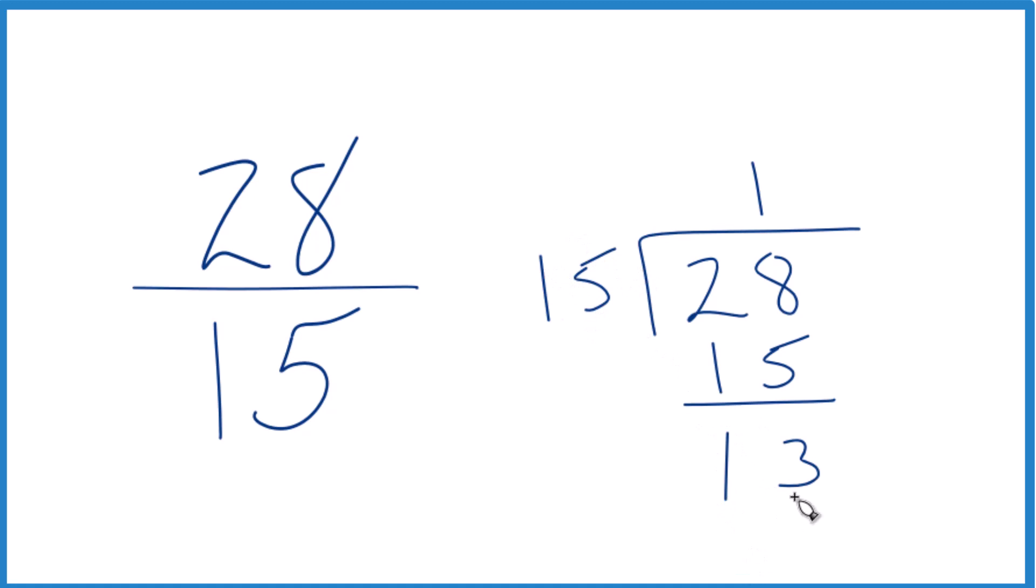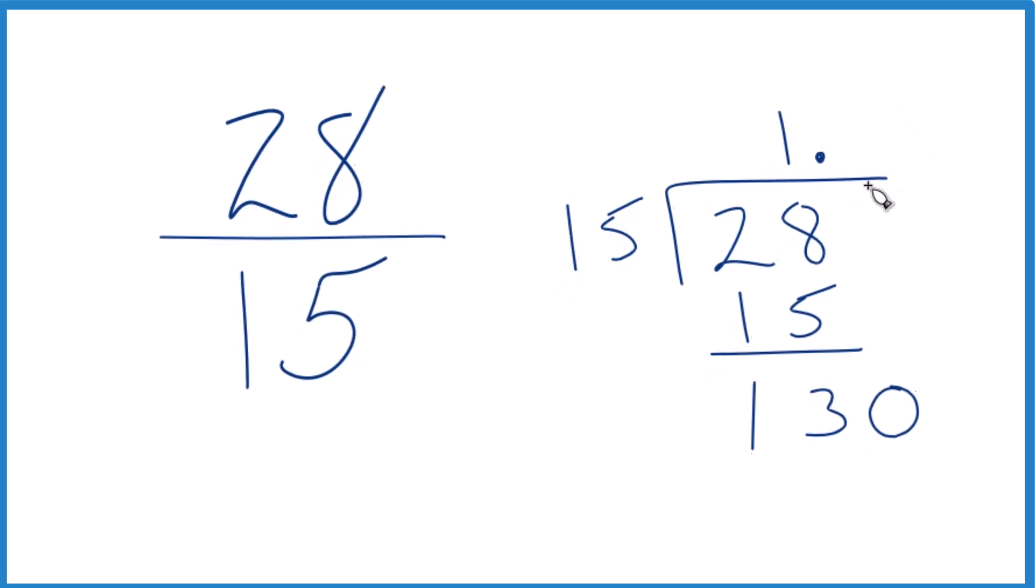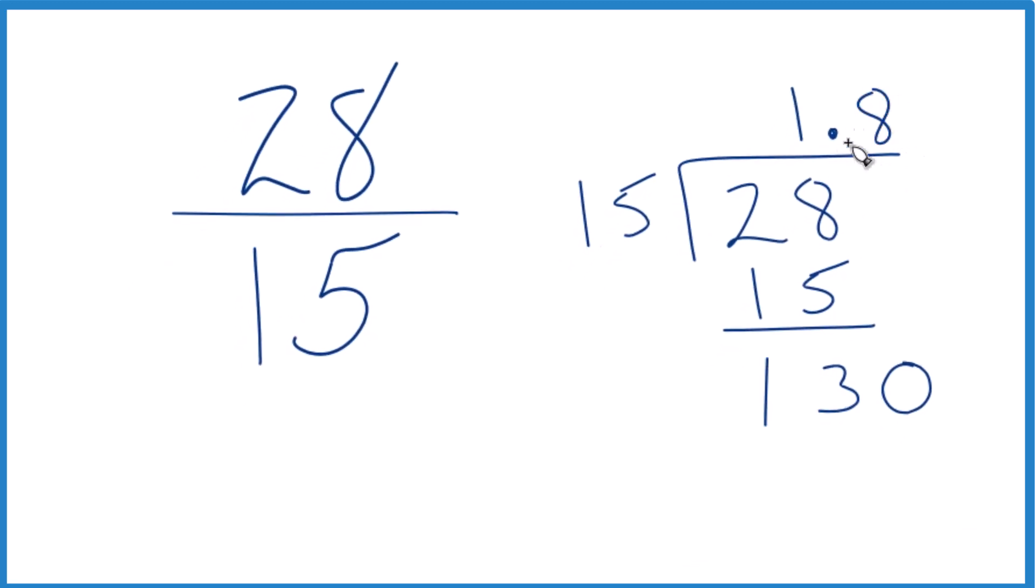So 15 doesn't go into 13, but we could call it 130 if we put a decimal point up here. How about 9 times 15? That would be too much. How about 8? So that's 40 plus 8, 120. So pretty close, 120.